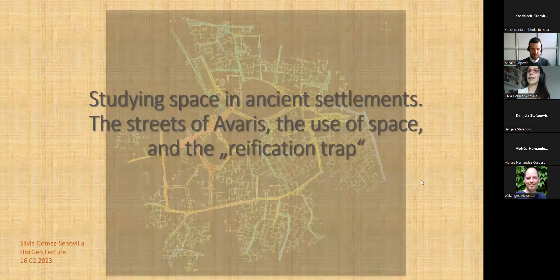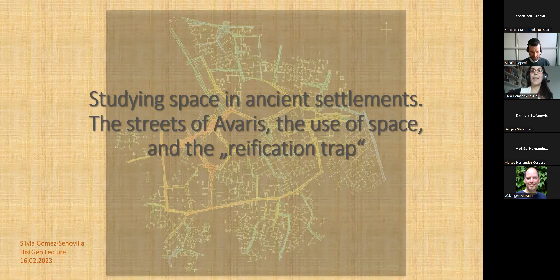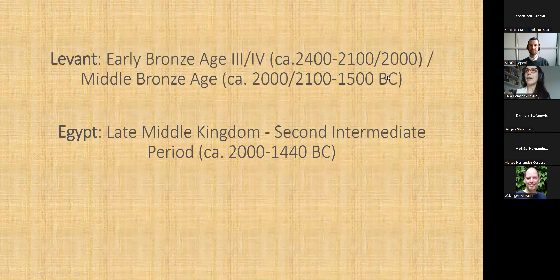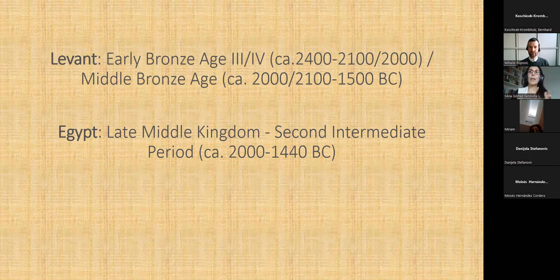I will show you the chronological scope I am dealing with. In the Levant or Syro-Mesopotamia we are talking about Early Bronze 3–4 and Middle Bronze Age, and in Egypt the Late Middle Kingdom and Second Intermediate Period — more or less around 2000 BC.